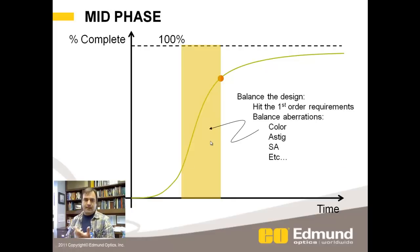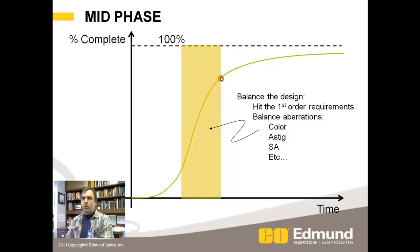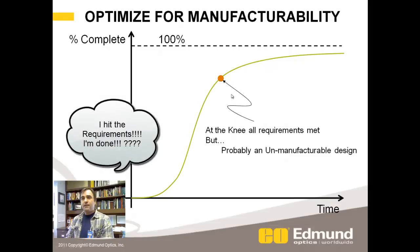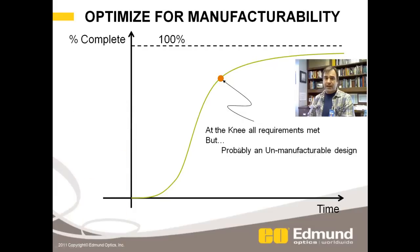Then in the mid phase — and these phases aren't formally established — you're spending your time doing the bulk of your lens design. You're hitting your first-order requirements: focal length, field of view, and you're balancing aberrations — color, astigmatism, spherical, et cetera. And you kind of get to this knee in the curve where you can say you've hit all the requirements the customer wants. The reality is, you've probably got an unmanufacturable design — it's not a pretty lens to look at.